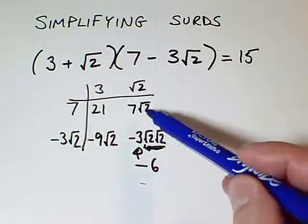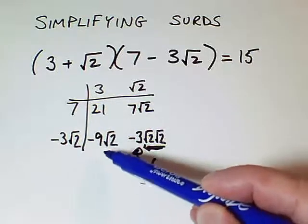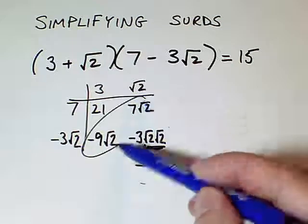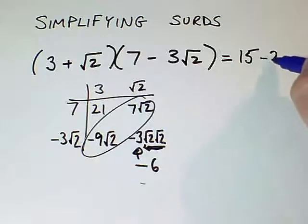And in terms of the root 2s, I've got plus 7 root 2 but minus 9 root 2. They total to minus 2 root 2.